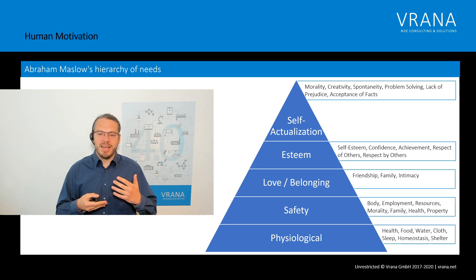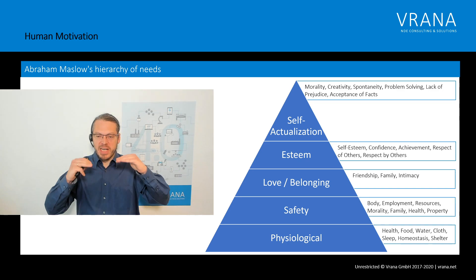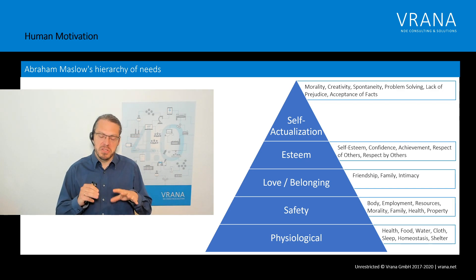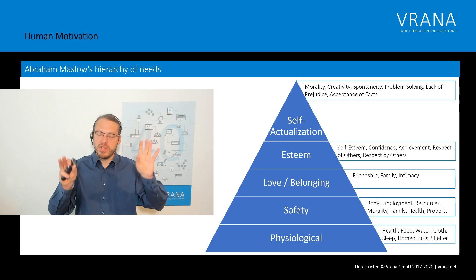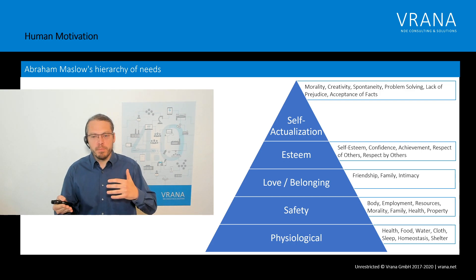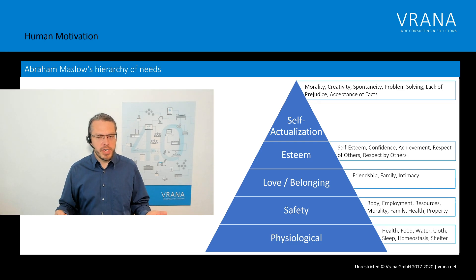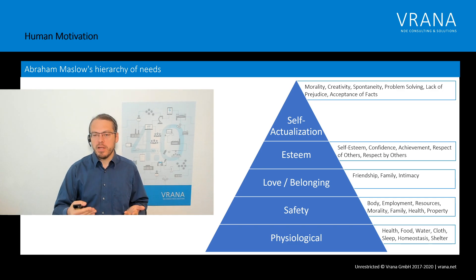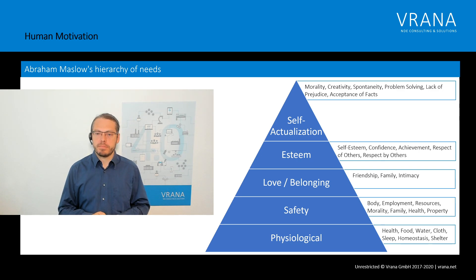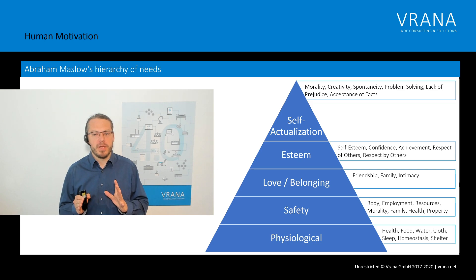This model is not strictly linear — humans can be satisfied physiologically and then work on safety, and so on. The most important point is that if something at a lower level is threatened, those lower levels take precedence. Like in our current situation where health is questioned, suddenly those lower levels become more important than the higher ones — more important than pursuing a big career. But what does this have to do with NDE 4.0 or Industry 4.0?